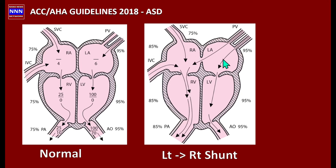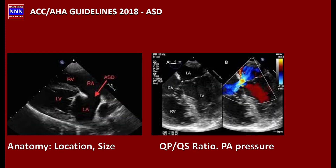This step-up in oxygen saturation — oxygenated blood flowing from the left atrium into the right atrium — indicates the shunt is at the atrial level. If the shunt were at the ventricular level, the atrial saturation would still be 75% and the step-up would appear at the ventricle instead.